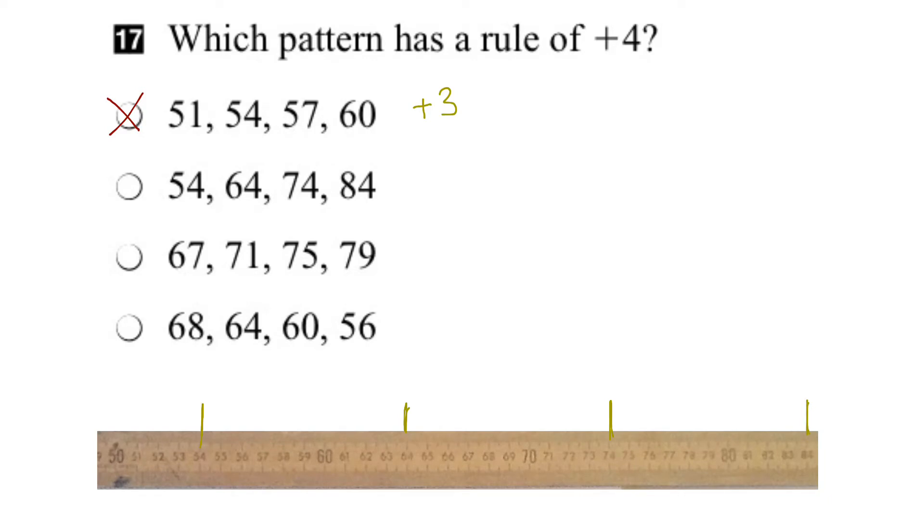Now you might already know what the answer is here, but let's go ahead and do the first one at least. So we go up by 1, 2, 3, 4, 5, 6, 7, 8, 9, 10 to get to the next number. And that would be consistent throughout, the pattern holds. We're going up by 10 each time, but again, we're looking for plus 4. So the plus 10, in this case, as the rule, is not the right answer.